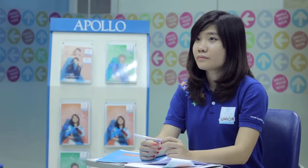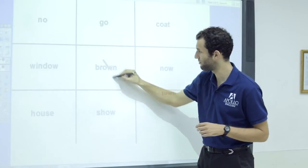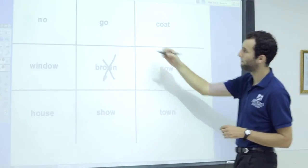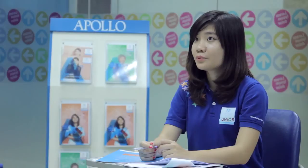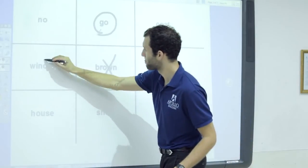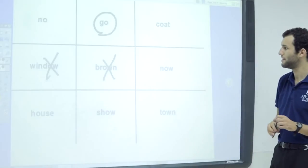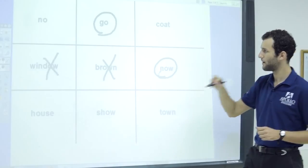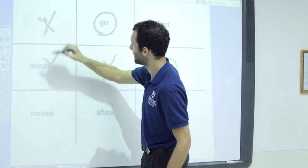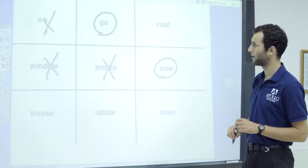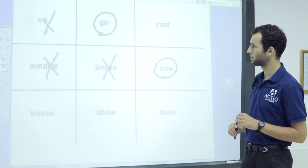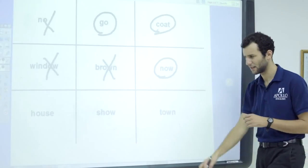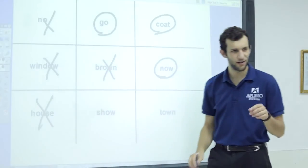So, start. Brown. Brown. Brown. Okay. Go. Window. Now. Note. Note. Coat. House. Okay. Good job, Chong. You won that one.